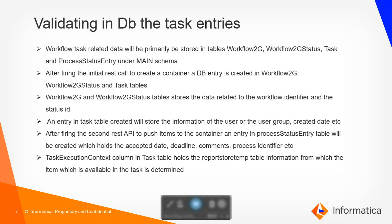Regarding how entries will be created at the database layer: workflow task data will be primarily stored in four different tables — workflow_2g, workflow_2g_status, task, and process_status_entry — inside the main schema. Once we create the container API, entries will be created in the workflow_2g and workflow_2g_status tables along with the task table. Once we fire the API to push the items, entries will be created in the process_status_entry table, which holds the user, user group, and the item IDs available inside that particular task.